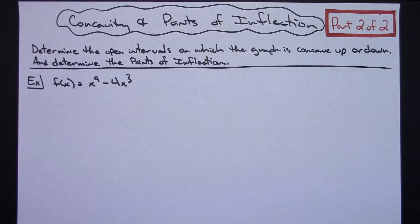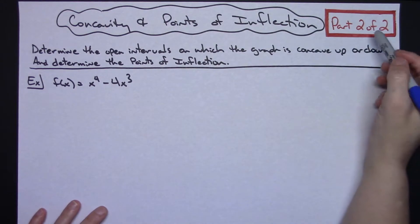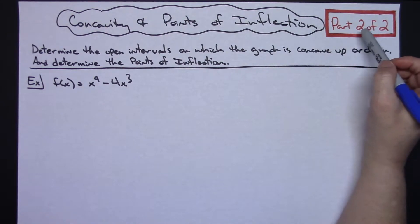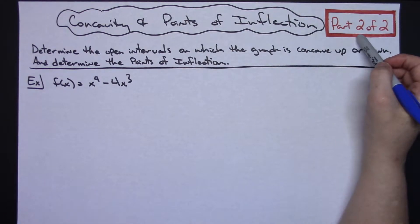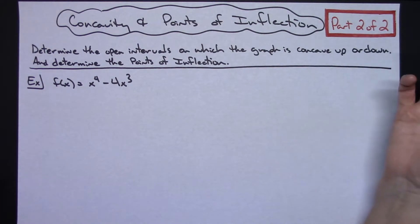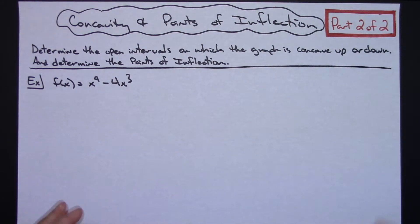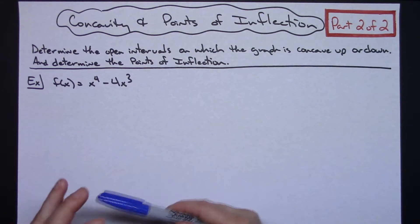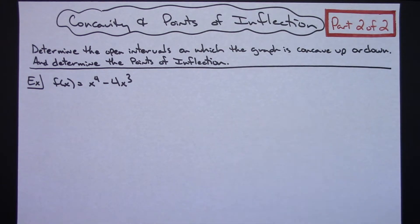In this video I'm going to work out a problem where we find the concavity and the points of inflection of a curve. This is part two of two, so you might want to go back and watch part one. In that one I talk about the definition of concavity, points of inflection, and what causes a point of inflection. If you don't have any background on concavity and points of inflection before seeing an example worked out, definitely go back and watch part one.